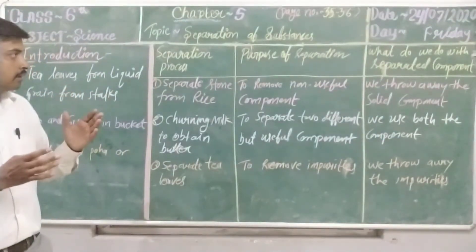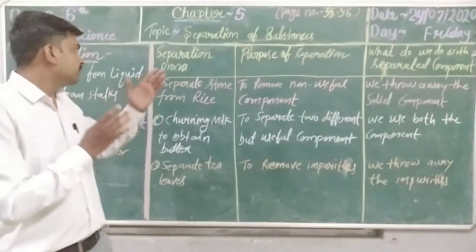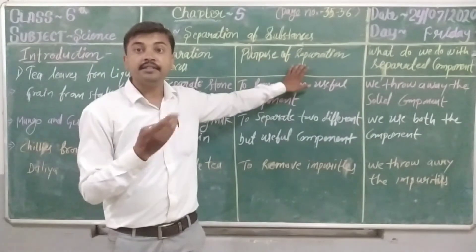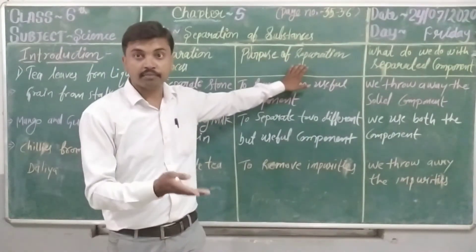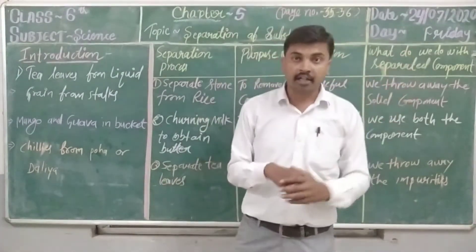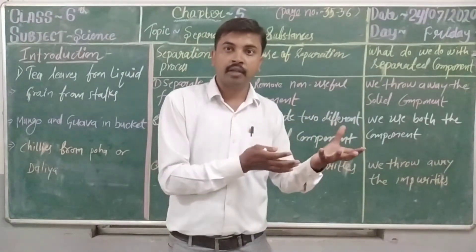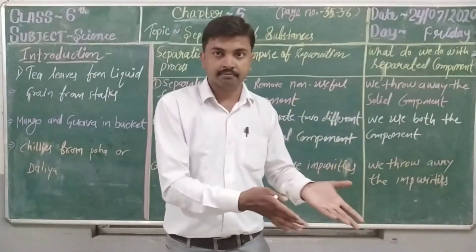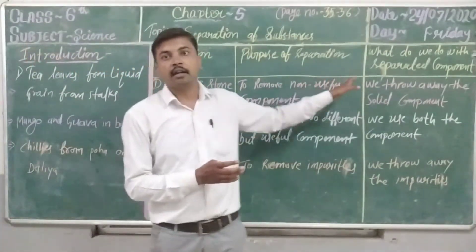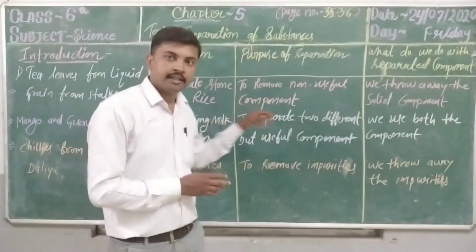In your book, there is a table listing different separation processes and the purpose of each separation — why we separate, and what we do with the separated components after separation. The second and third columns in the table are jumbled, so I have arranged it and we will discuss the corrected table.